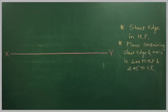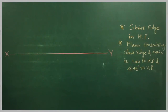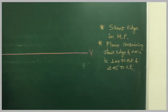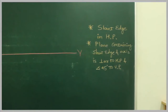In this problem, the solid is resting on one of its slant edges in HP, and the plane containing the slant edge and the axis is perpendicular to HP and inclined at 45 degrees to VP. First, we will see it is resting on its slant edge.